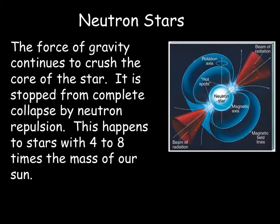After the supernova, one of two things can happen. If the star is around 4 to 8 solar masses, it will become a neutron star. The outer layers get blasted into space, but the core continues to be crushed by gravity. Gravity is so strong that it forces protons and electrons into one another to become neutrons. The only thing holding the star from complete collapse is the repulsion force between neutrons — hence the name neutron star. Neutron stars sometimes spin due to this rapid collapse and are known as pulsars, emitting beams of radiation from their magnetic poles.